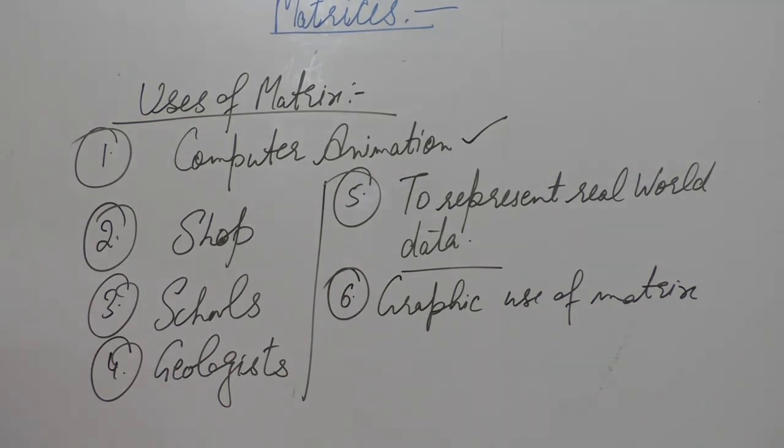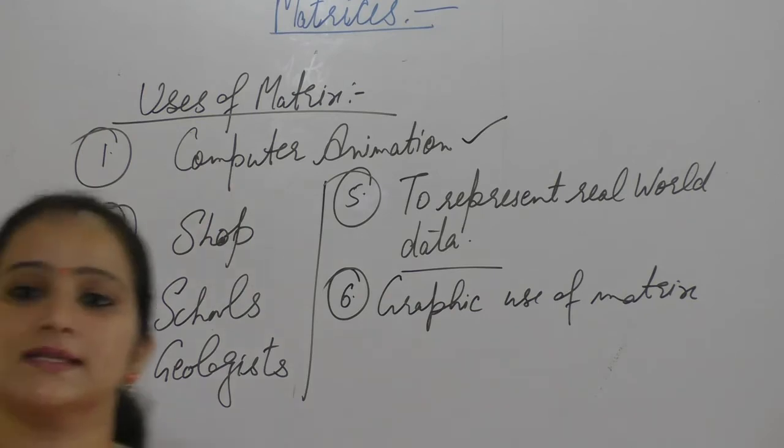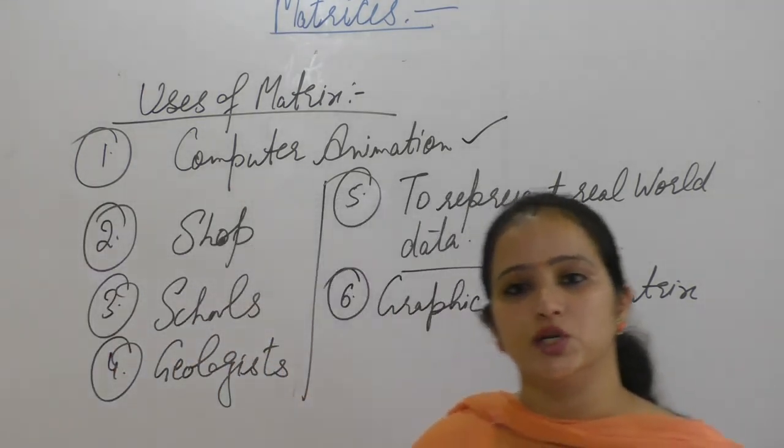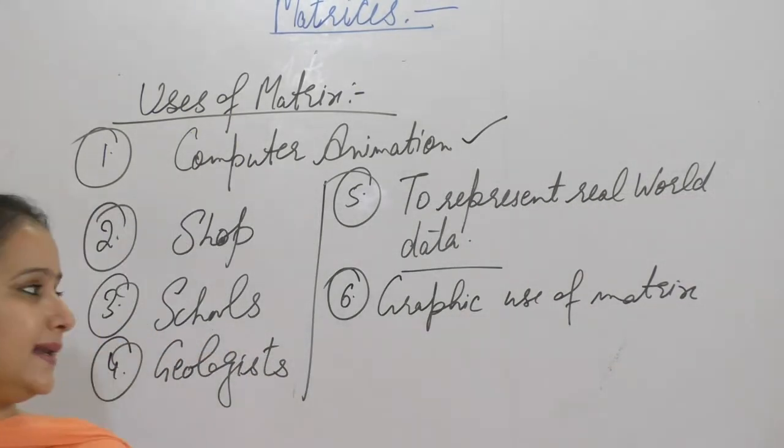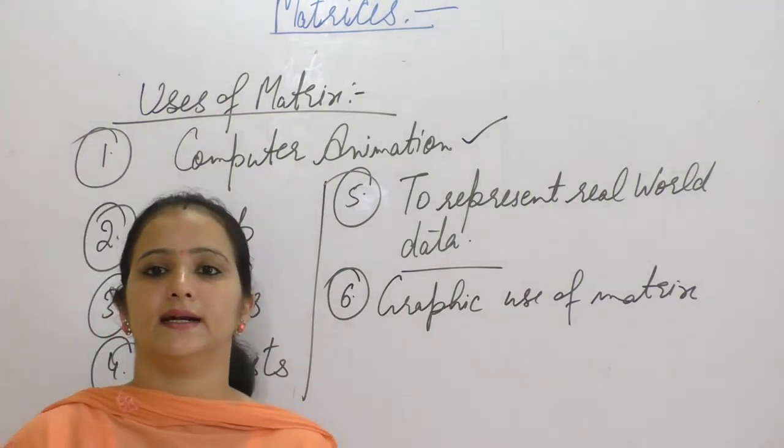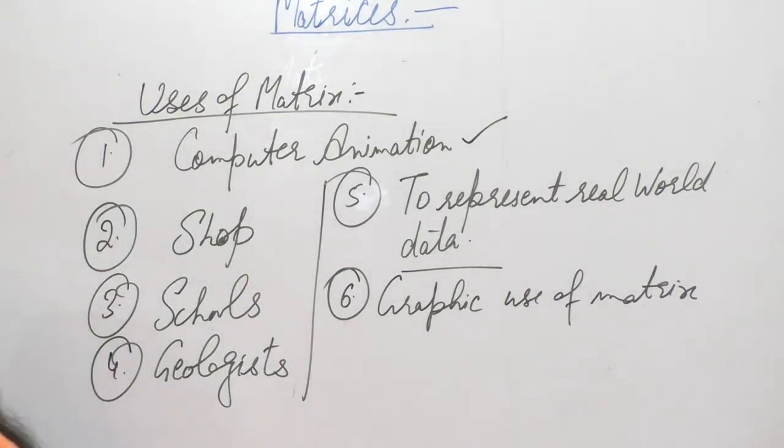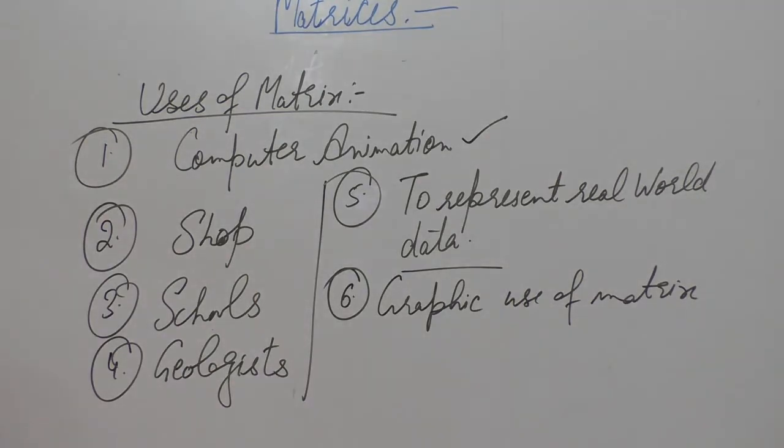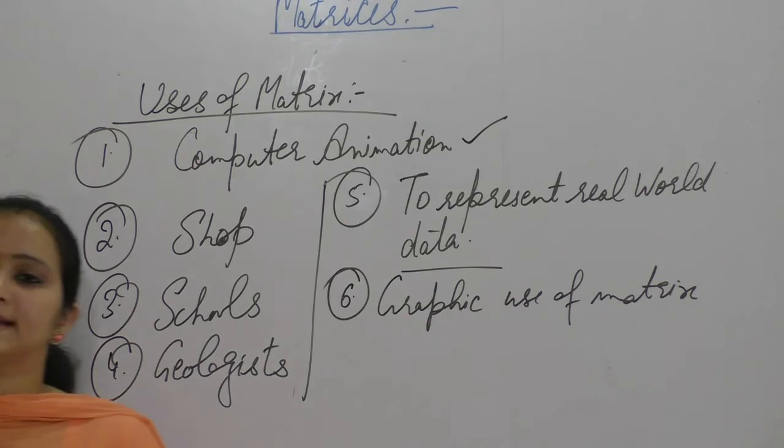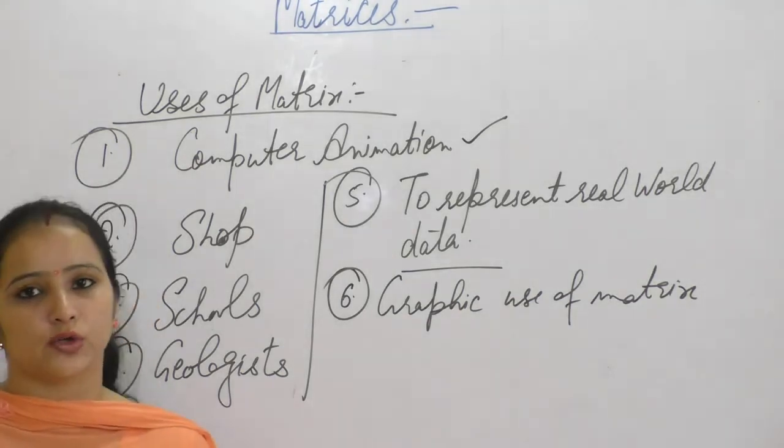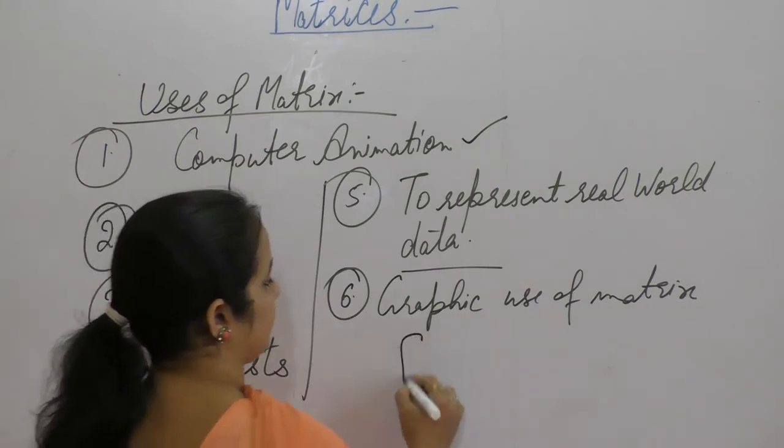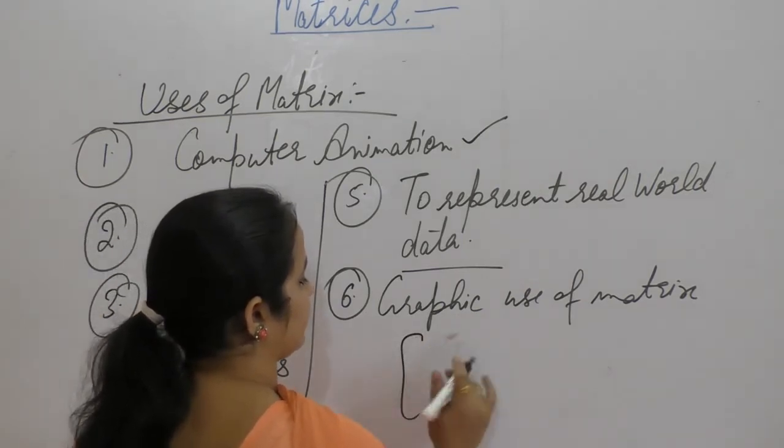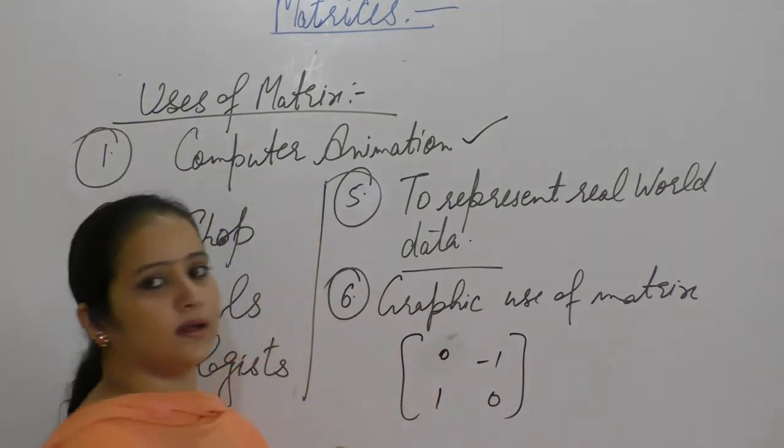Graphics software uses matrix mathematics to represent linear transformation to render images. A square matrix, one with exactly same number of rows and columns, can represent linear transformation of geometric objects.